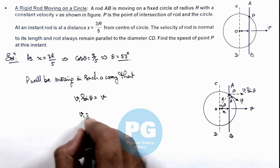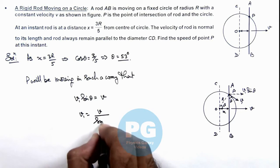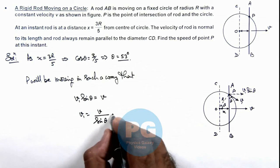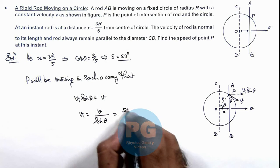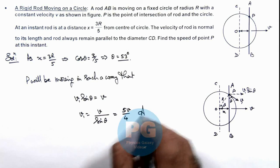So the value of v1 is equal to v by sine theta, and as theta is 53 degrees, sine theta will be 4 by 5. So this is 5v by 4, that will be the result of this problem.